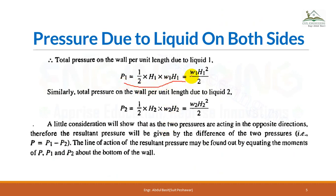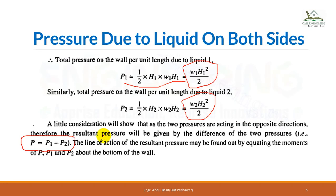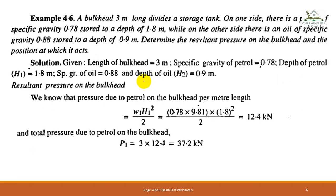So P1 equals w1·h1 and P2 equals w2·h2. The difference P1 minus P2 is the total resultant pressure. To find the position of this resultant pressure, take moments as before, maintaining signs: the positive pressure contributes a positive moment and the negative pressure contributes a reverse moment.